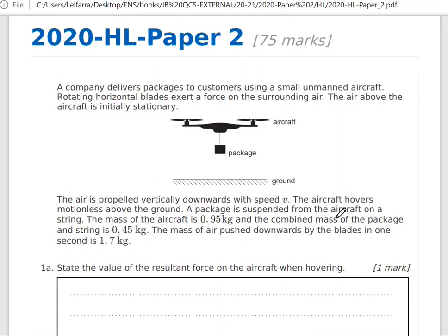The air above the aircraft is initially stationary. Here we have the aircraft and it's holding a package. Here we have the string and the package. The mass of the aircraft is 0.95 kilogram.